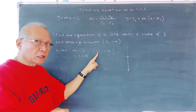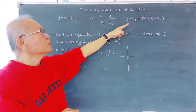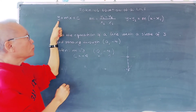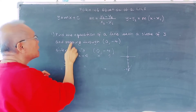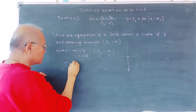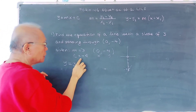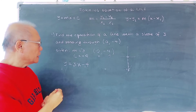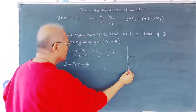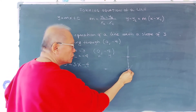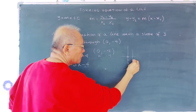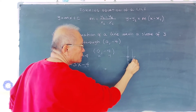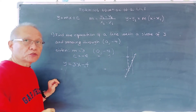If the x-value of the point is zero, then we can directly identify the y-intercept c as negative four. So we use the slope-intercept form: y = 3x − 4. That is our equation of the line. To plot it, we start at negative four and use the slope three-over-one, moving up three and right one.